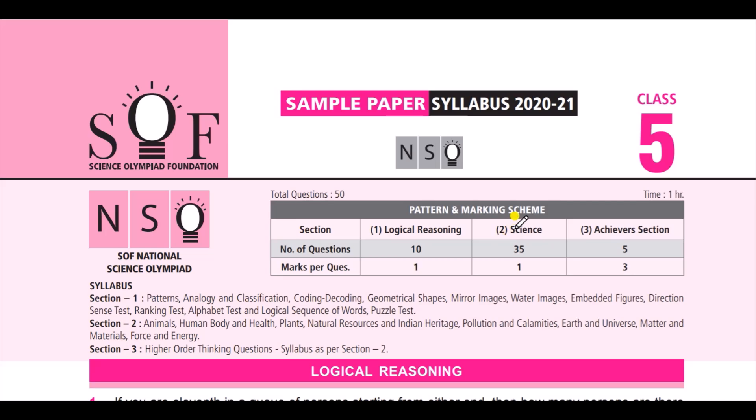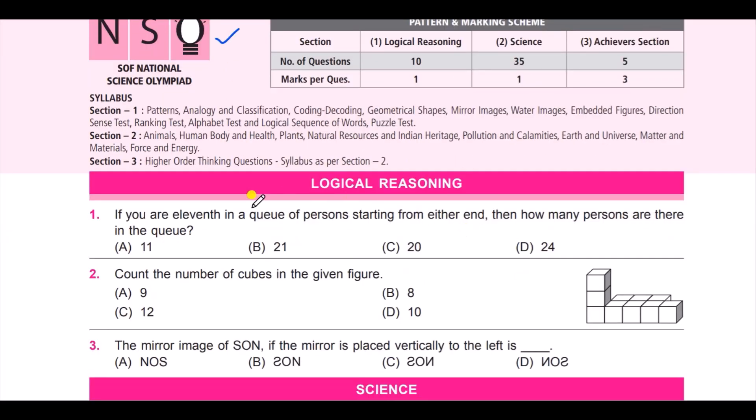Hello everyone, welcome back to Orchid's eLearning. Today let us solve the sample question paper for NSO, that is National Science Olympiad for Class 5. Let's begin then. Question number one: if you are eleventh in a queue of persons starting from either end, then how many persons are there in the queue?